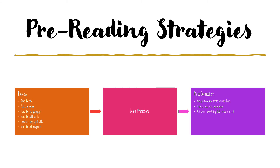Some of the pre-reading strategies we're going to work with this week include: reading the title, looking for the author's name, reading the first paragraph, looking at any bold words and trying to figure out what they mean before you read, looking for graphic aids like charts, graphs, pictures, and photographs, and reading the last paragraph. If you read the first and last paragraphs, you have a pretty good idea of what's going on. This can also help you generate questions to give yourself a purpose while reading. You can make predictions about where the piece is going and why your instructor assigned it, and then make connections, ask questions, and try to answer them by drawing from your own experience.